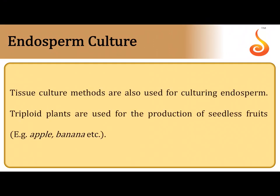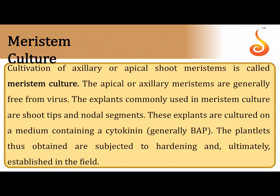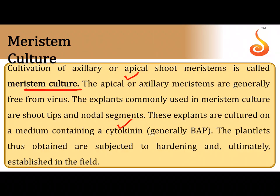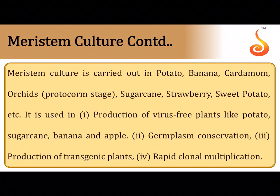Endosperm culture involves culturing triploid tissue of triple fusion (post-fertilization tissue) to obtain triploid plants. Meristematic culture takes apical or axillary meristems and cultures them on cytokinin-containing medium, causing rapid division of meristematic cells and giving rise to a callus that takes shape as a plantlet.